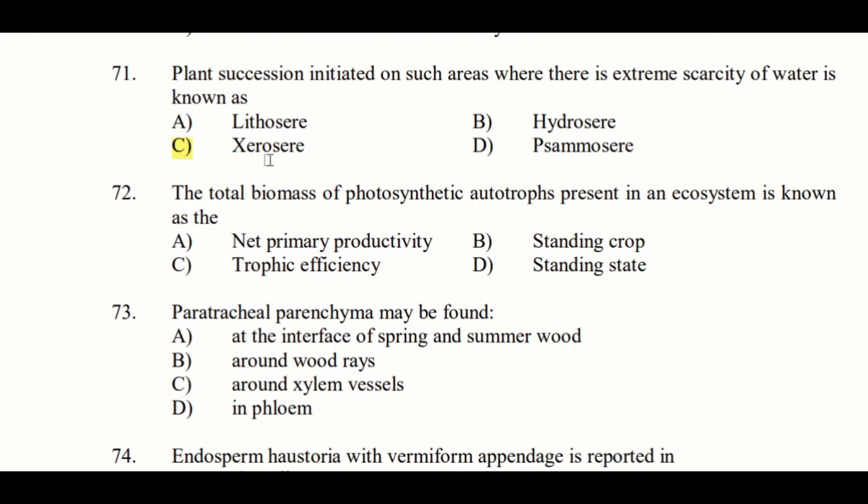Question 72: The total biomass of photosynthetic autotrophs present in an ecosystem is known as — Option A: Net primary productivity, Option B: Standing crop, Option C: Trophic efficiency, Option D: Standing state. The answer is Option B: Standing crop.